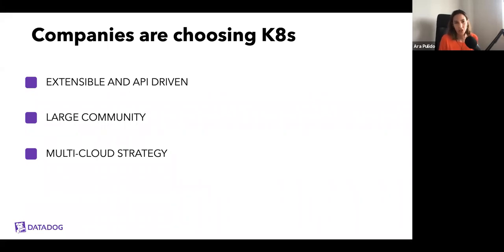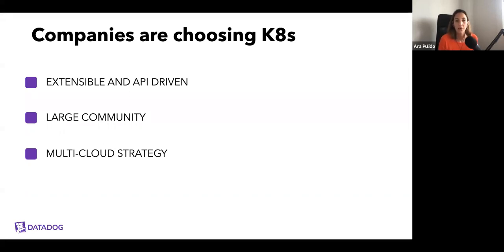The second reason is its large community. There are many companies putting a lot of development effort into Kubernetes, so new features and bug fixes get ready very quickly. Another reason is it helps with your multi-cloud strategy — if you want to run your application on several clouds, having this extra abstraction layer with Kubernetes between your application and the cloud may help you migrate those applications between different clouds.